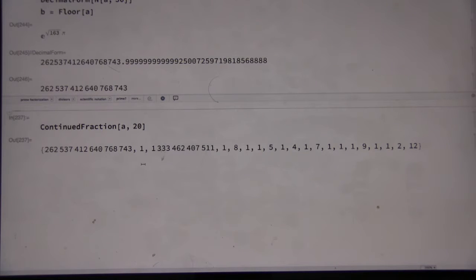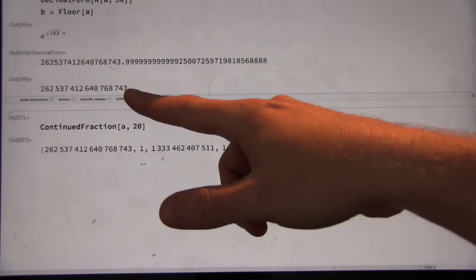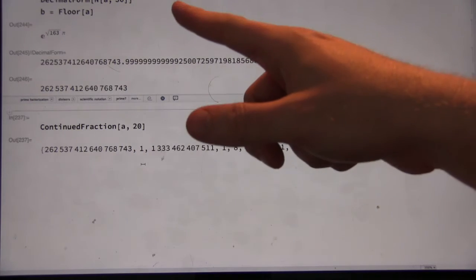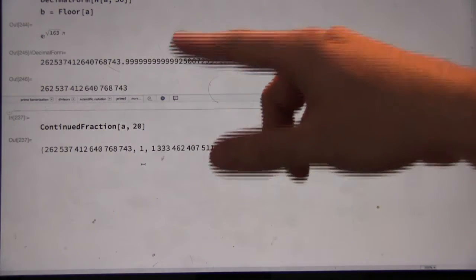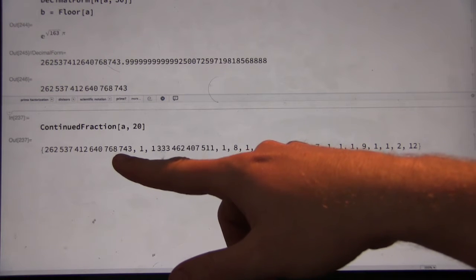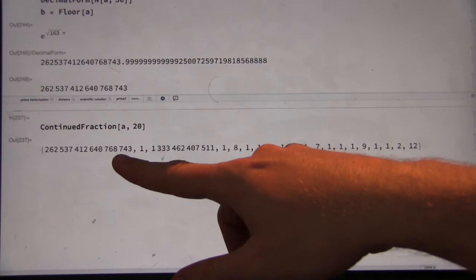And in fact, just for fun, here's the integer below it, and then here's the continued fraction for our number e to the square root of 163 times pi. It starts out with this giant integer. What does that represent? It's the number itself. It's the integer part of the number.